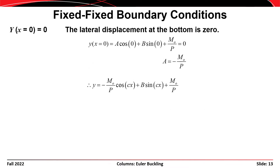Applying boundary conditions: first, y(x=0) = 0 gives A = -M₀/p, so the solution becomes y = -(M₀/p)·cos(cx) + B·sin(cx) + M₀/p. Second, for the fixed-fixed column the rotation at the base must also equal zero: y'(x=0) = 0. Taking the derivative and setting x=0 yields the condition that B·c = 0, meaning B = 0.